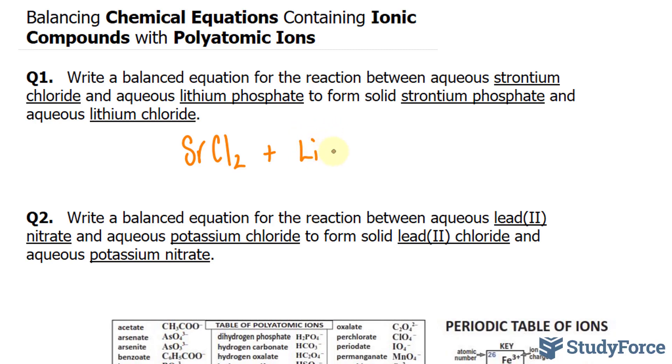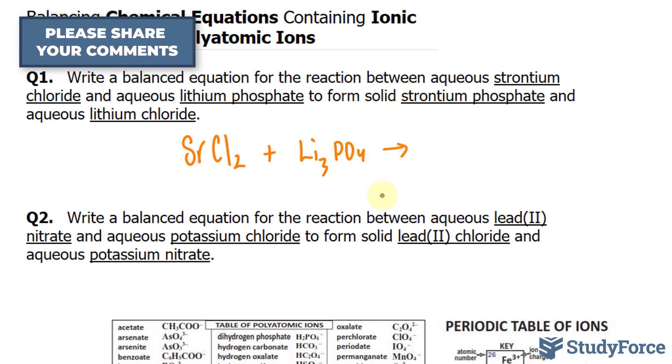So we have Li3PO4, the charge of phosphate will be placed as the subscript for lithium. Nothing will be placed beside the PO4. And this yields solid strontium phosphate.